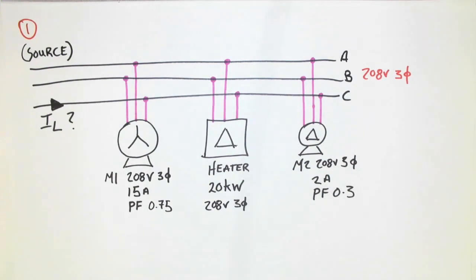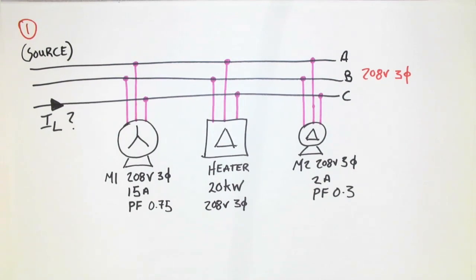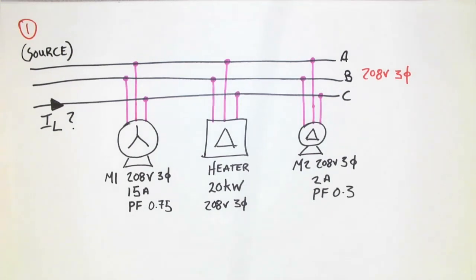Motor one has a power factor of 0.75, whereas the heater is operating at a power factor of one and is 20 kilowatts worth of power, 208-volt three-phase. Motor two is also 208-volt three-phase, 2 amps — that would be the line value — with a power factor of 0.3.